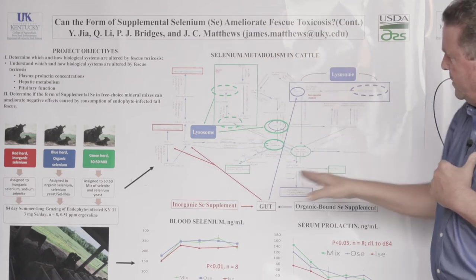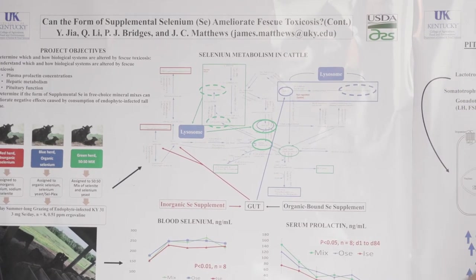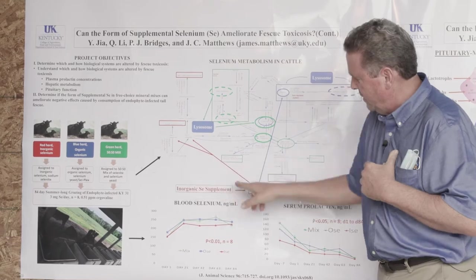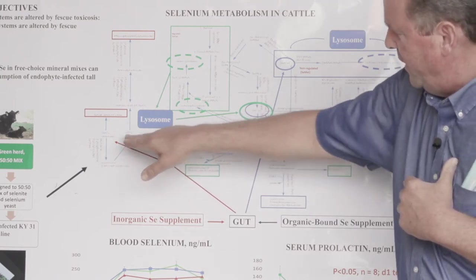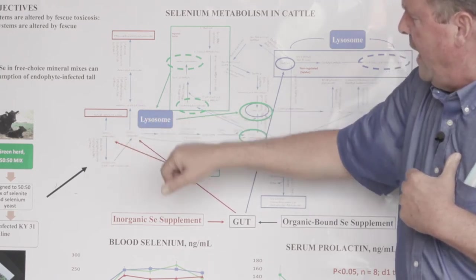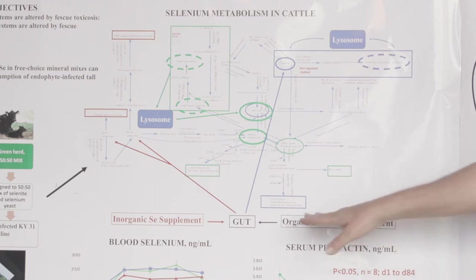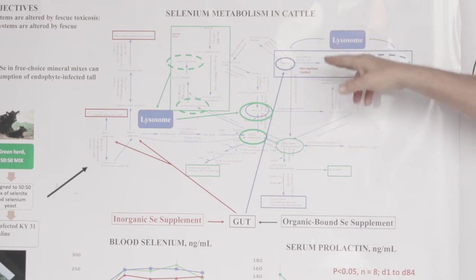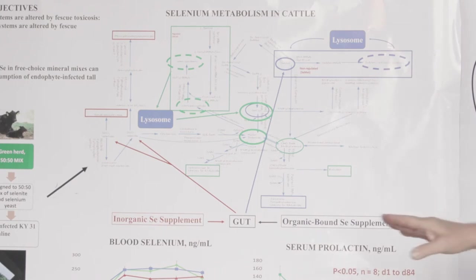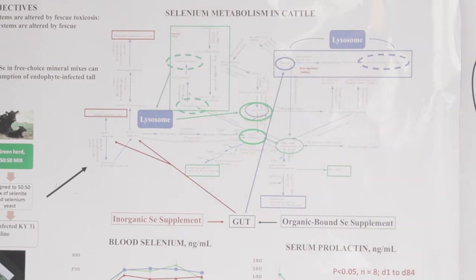This complicated chart is showing that. This is how we understand selenium metabolism in cattle. What we have in the inorganic in red here, when that is consumed by the cow, it is then taken and has a separate pathway over here in the inorganic forms, and excreted separately in urine in two different forms. That's compared to when we feed organic-bound selenium. We have the blue pathway over here. This is what we call the non-regulated and then the regulated pathway. So, when we feed a mix, we are feeding a combination of the red and the blue and gives us our green.